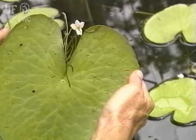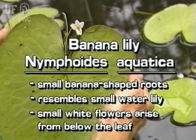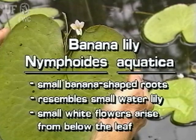The banana lily has small banana-shaped roots. The plant resembles a small water lily. Small white flowers arise from below the leaf.